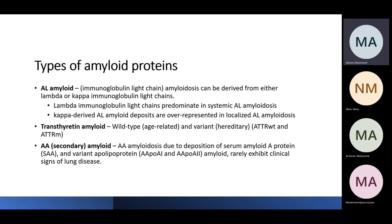The most common protein affecting the lung is AL amyloid, which can be due to immunoglobulin light chain — either systemic or localized, due to Lambda or Kappa light chains. Transthyretin (TTR) amyloidosis is less common, and secondary amyloidosis can also affect the lung.